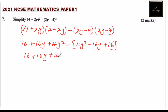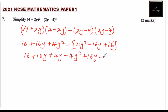After opening the bracket, we have 16 plus 16y plus 4y squared, then minus 4y squared. Because minus and minus gives positive, that will give us positive 16y, and minus and positive gives minus 16.